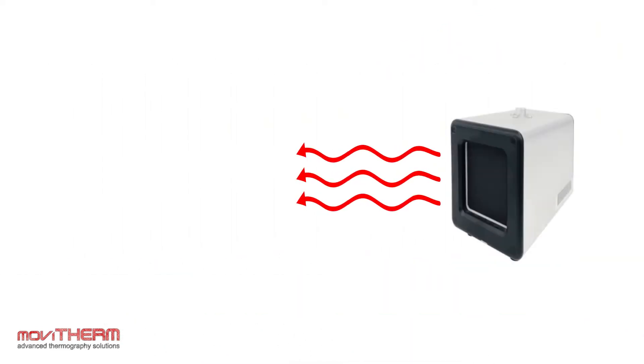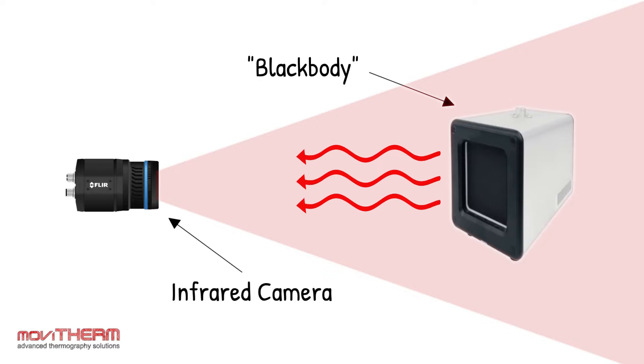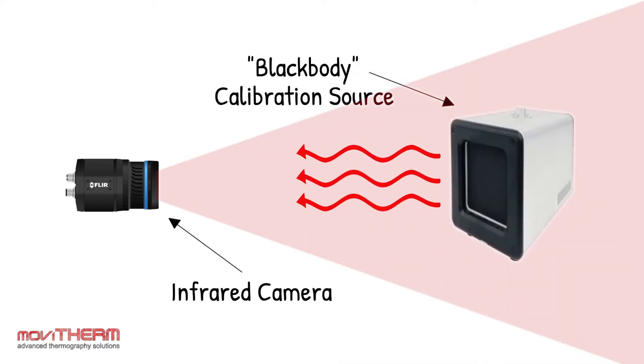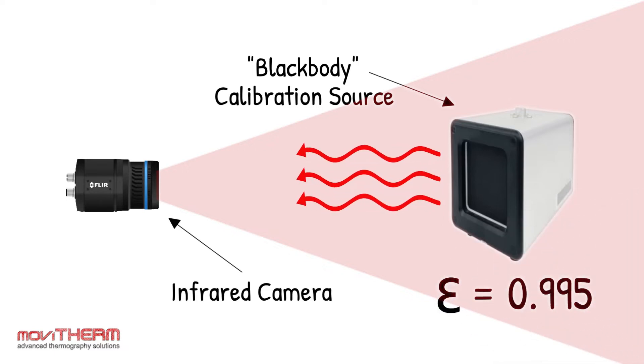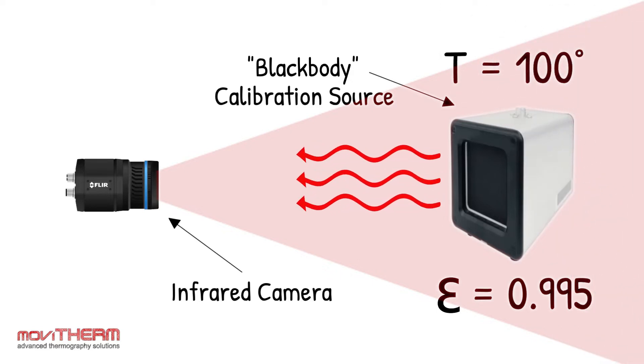Sources used to calibrate infrared thermometers and infrared cameras are sometimes called blackbodies. These calibration sources have a black radiating surface of high emissivity up to 0.995 and have integrated temperature control electronics. These blackbody calibration sources are programmed to emit infrared radiation at a specified temperature.